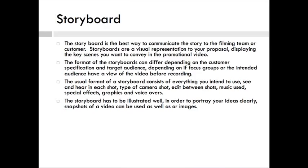The usual format of a storyboard consists of everything you intend to use in each shot: type of camera shot, edit between shots, music cues, special effects, graphics, and voiceovers. Some elements can be left out — you may not have graphics or voiceovers in every video; it depends on the client and what you envisage as the best promotional video for them. The storyboard has to be illustrated clearly to portray your ideas. Snippets of video or images from other productions are also a great way to show the film team your ideas, as most people respond better to visual learning compared to just words.